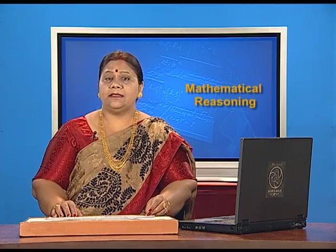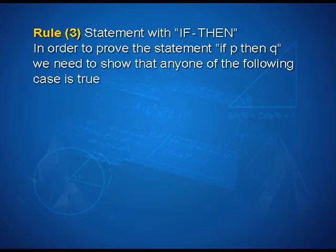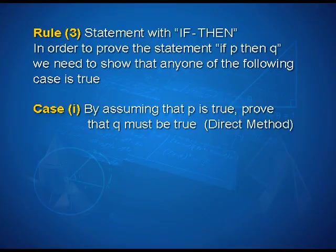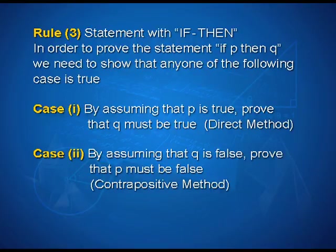Now let us discuss the third rule: statements with 'if-then'. In order to prove the statement 'if p then q', we need to show that any one of the following cases is true. Case 1: by assuming that p is true, prove that q must be true — that is the direct method. Case 2: by assuming that q is false, prove that p must be false. This is the contrapositive method.